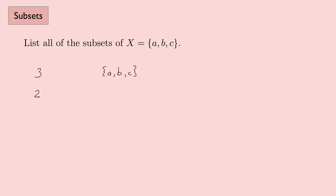What about all of the subsets with two elements? Okay, so I could do A and B. That's a subset. I could do B and C. That's a subset. I could do A and C. That's a subset.